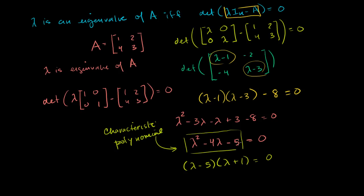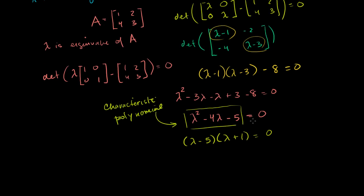Minus 5 times 1 is minus 5. And then minus 5 lambda plus 1 lambda is equal to minus 4 lambda. So the two solutions of our characteristic equation being set to 0, our characteristic polynomial, are lambda is equal to 5 or lambda is equal to minus 1.